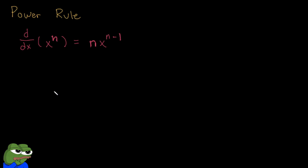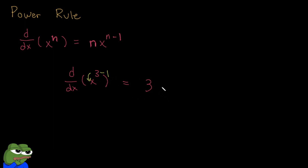Let's try taking the derivative of x cubed. We want to bring down the exponent, and then subtract 1 from the exponent. So that looks like 3 times x to the 3 minus 1, which is just 2. So our final derivative of x cubed is just 3x squared.